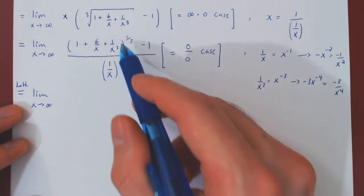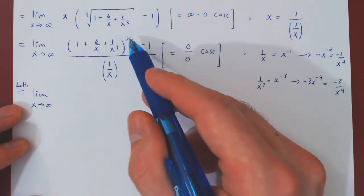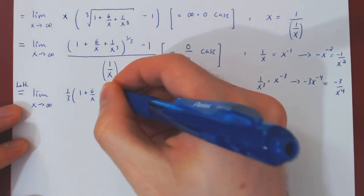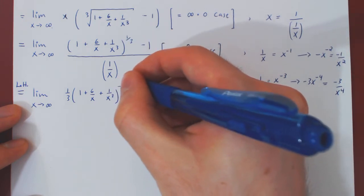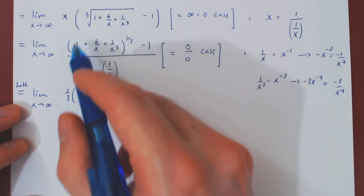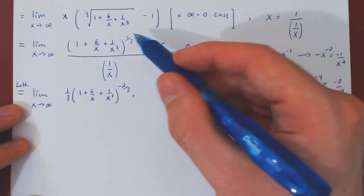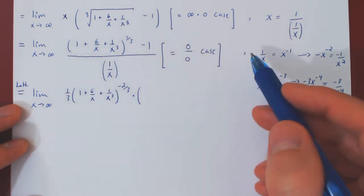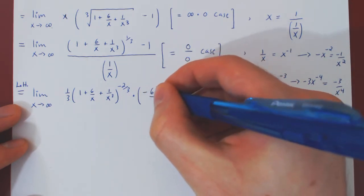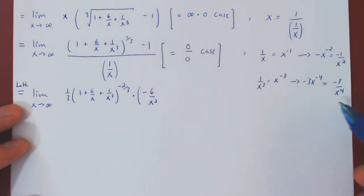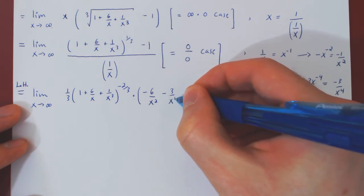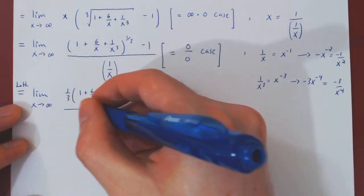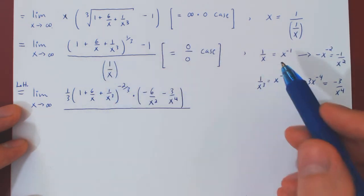Now we differentiate the numerator. By the chain rule, the outer function gives us 1 third times the argument raised to the power of negative 2 thirds. Then we multiply by the derivative of the argument: the derivative of 1 is 0, the derivative of 6 over x is negative 6 over x squared, and the derivative of 1 over x cubed is negative 3 over x to the fourth. So that gives the derivative of the numerator. Divided by the derivative of the denominator, which is the derivative of 1 over x: negative 1 over x squared.